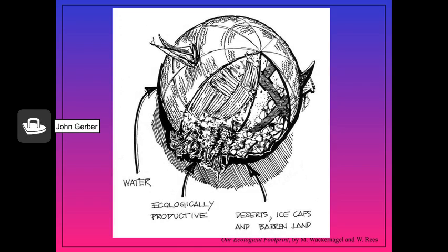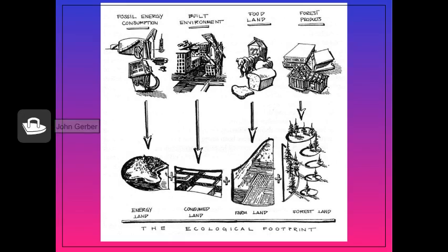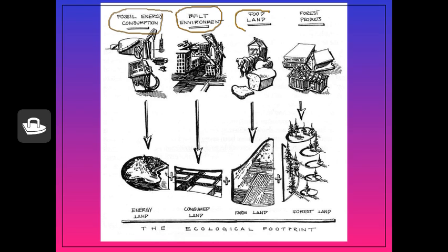Here's the basic idea: we have a limited amount of ecologically productive land — land that is useful for producing things and absorbing our wastes. Much of the planet is water, deserts, and ice caps. The footprint calculation determines how much land is required for you to produce energy, create a built environment like a home, produce enough food for yourself, and create other products to keep you alive.